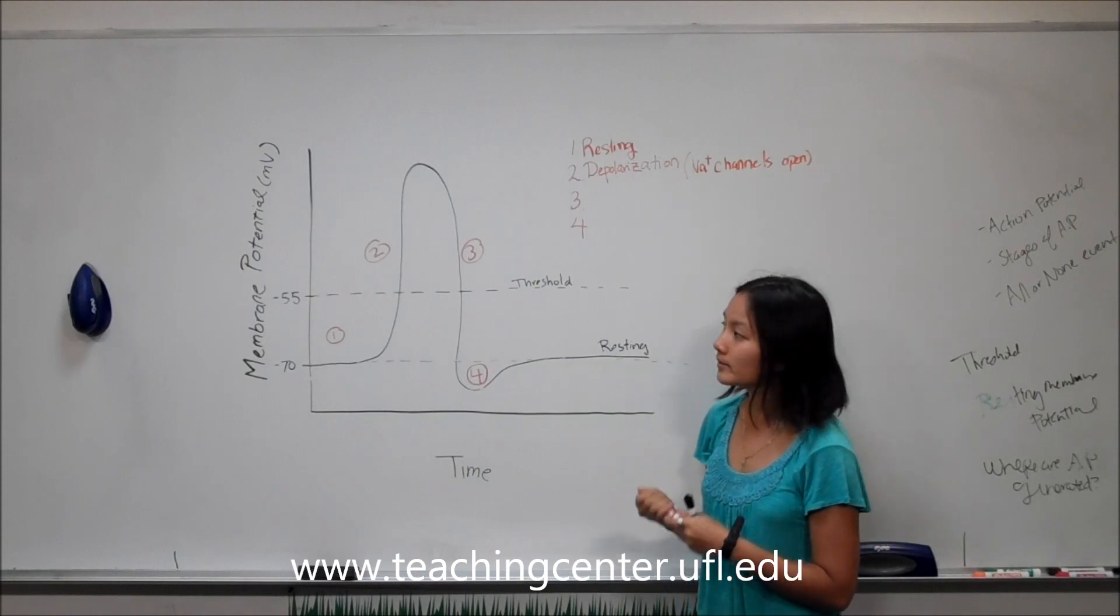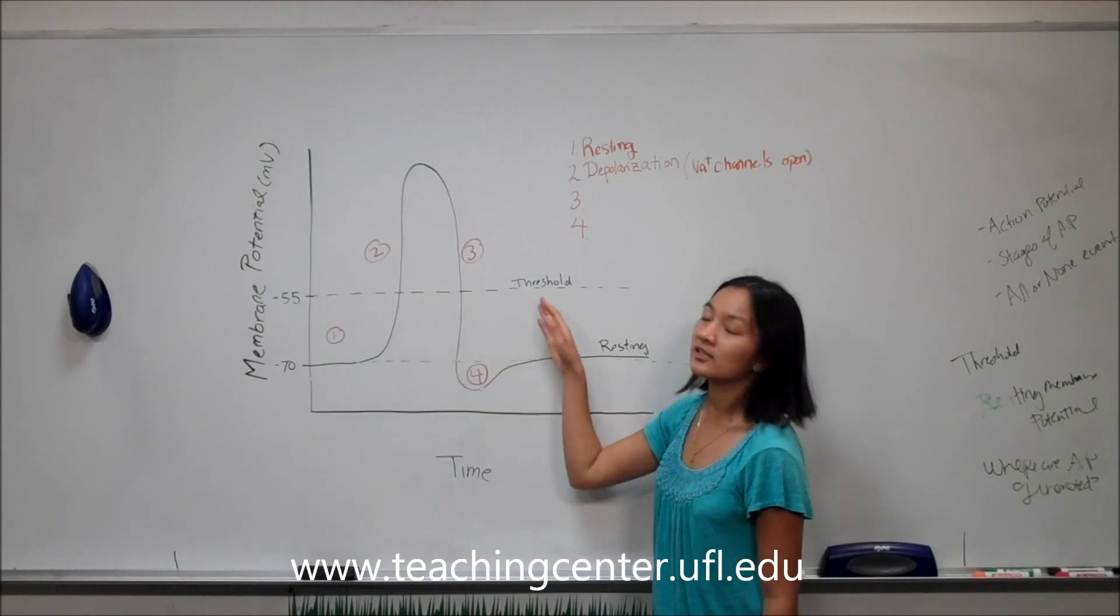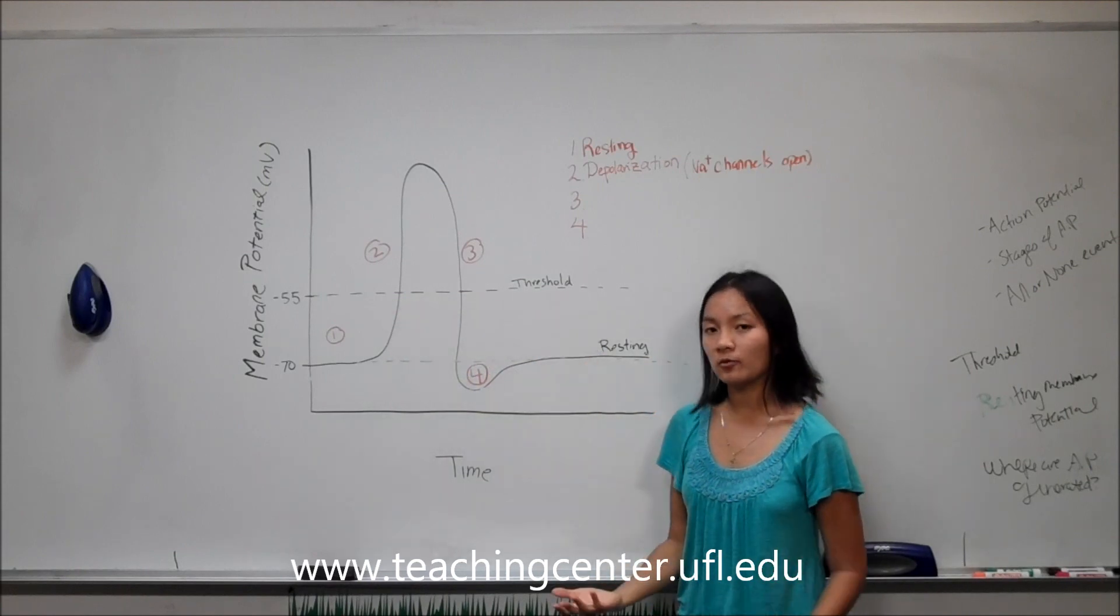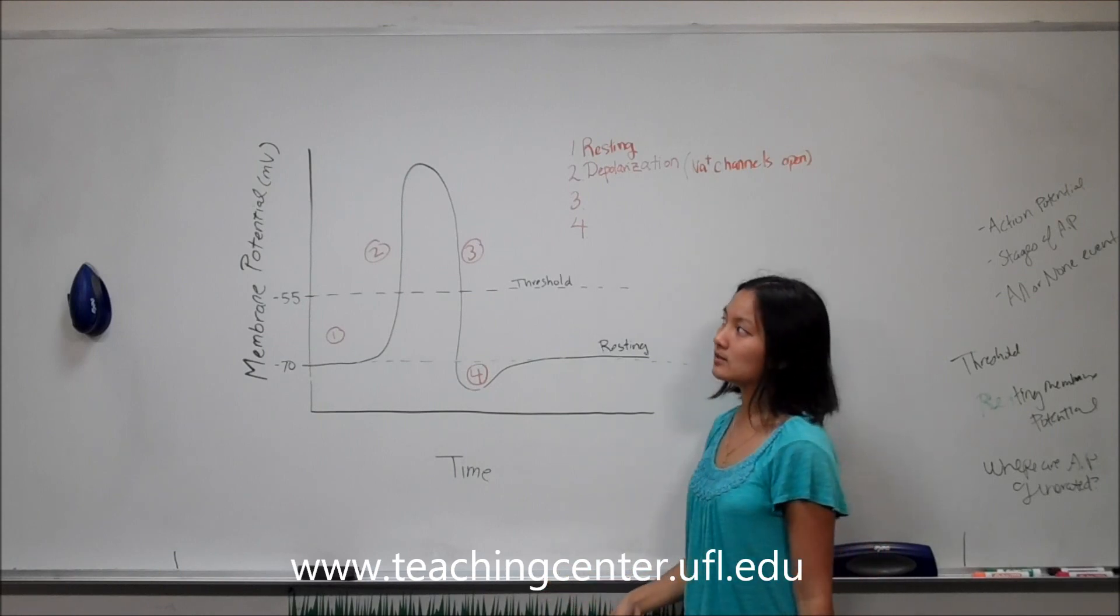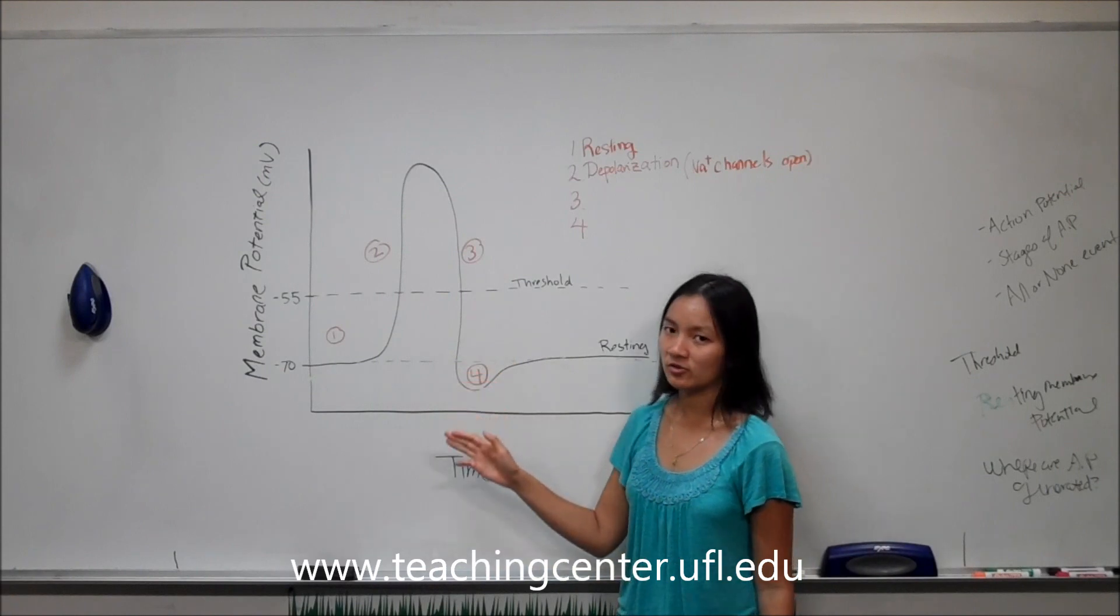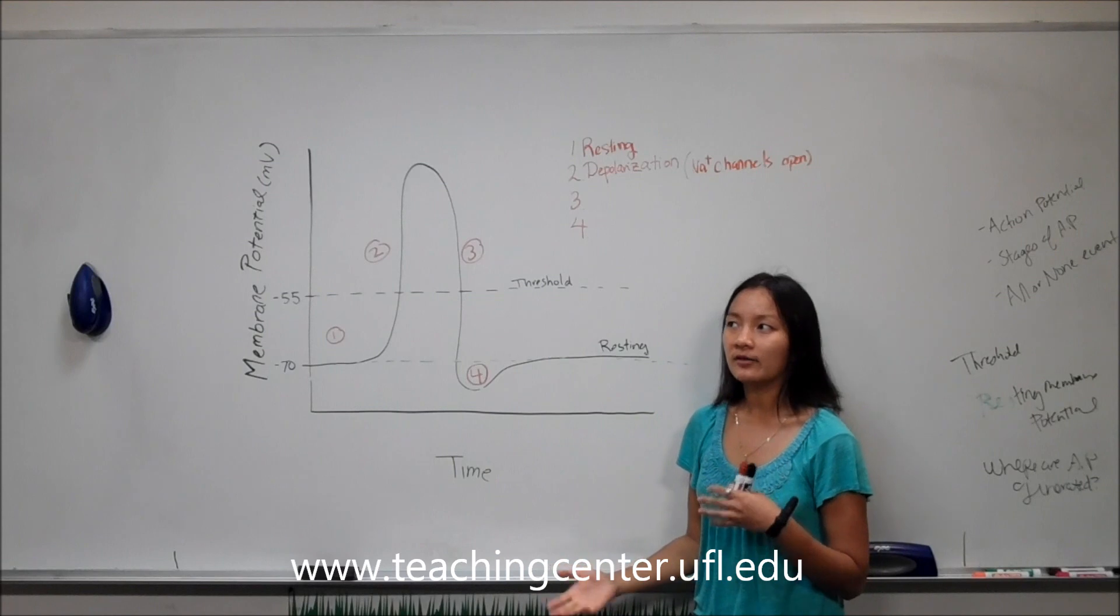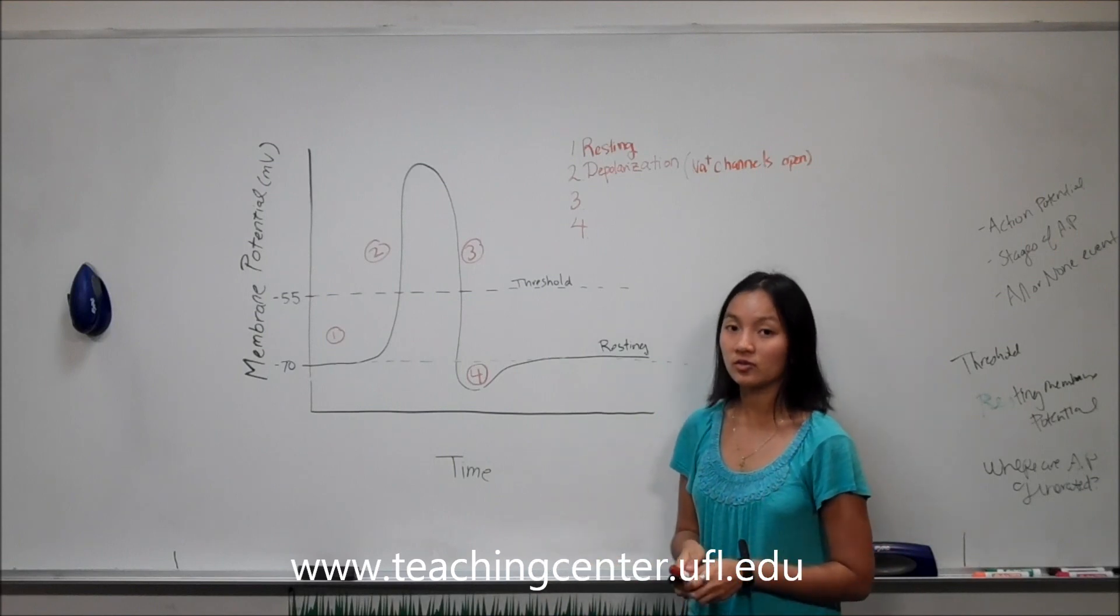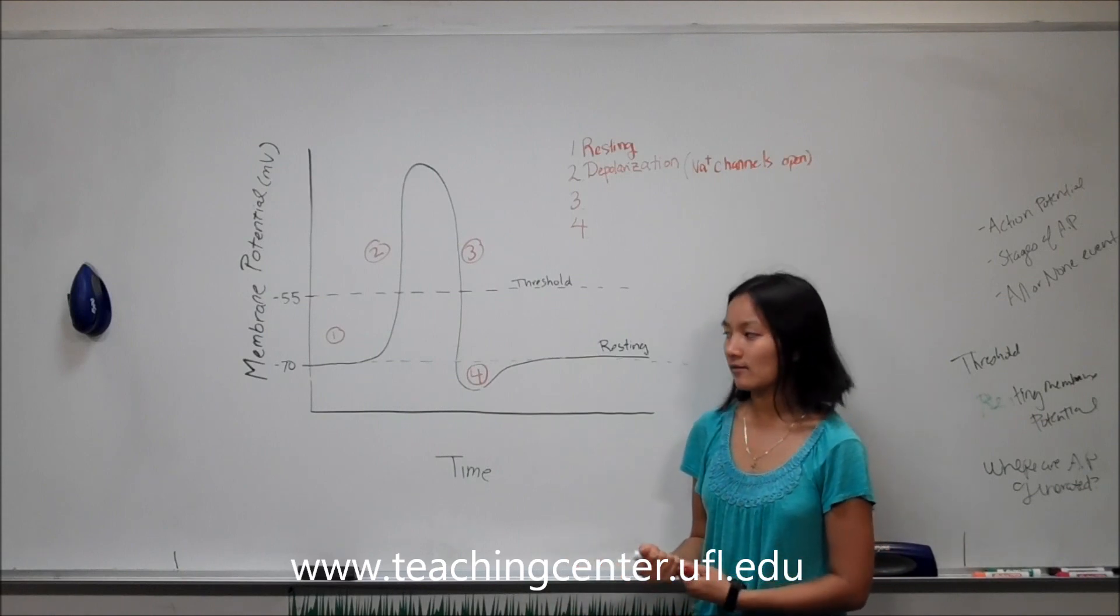Your membrane potential in the neuron increases steadily, and then it hits threshold value. Threshold, like we mentioned before, is the minimum membrane potential value your neuron needs to achieve to have an action potential. Once it hits threshold, an action potential will occur no matter how much stimulus you have. So in this case, when it comes to neurons and action potentials, they are known as all or none events.